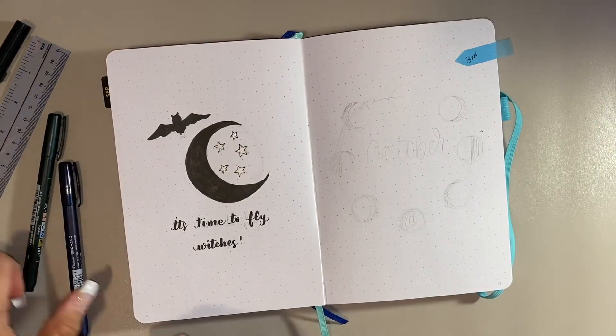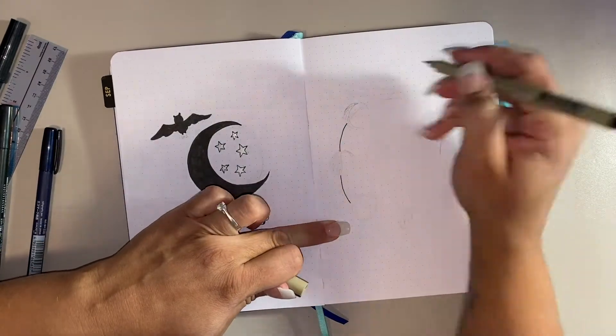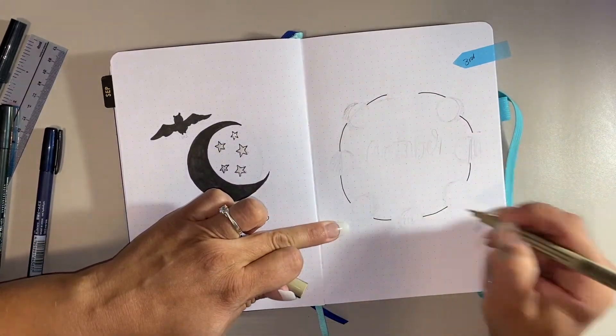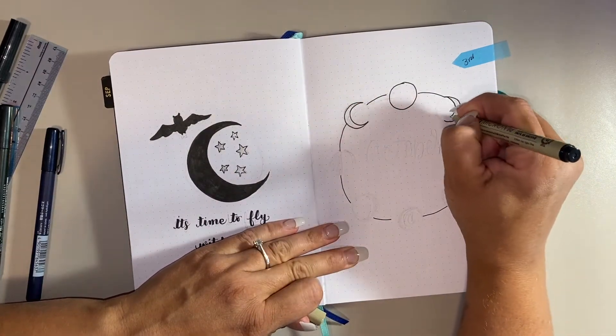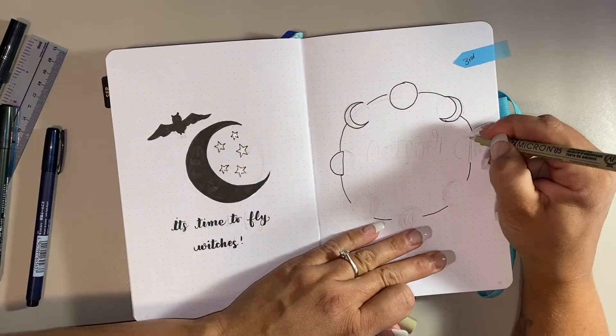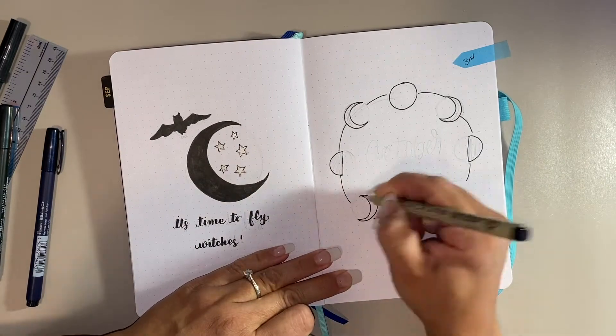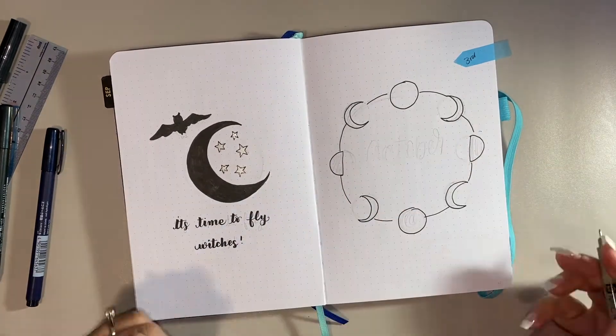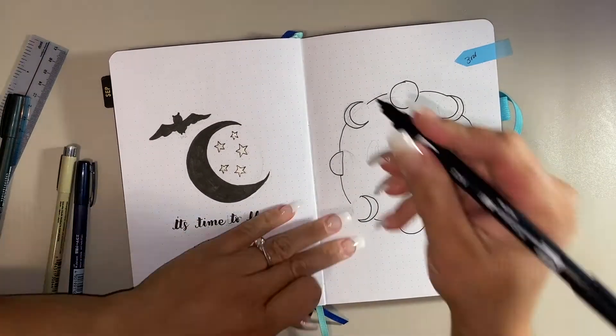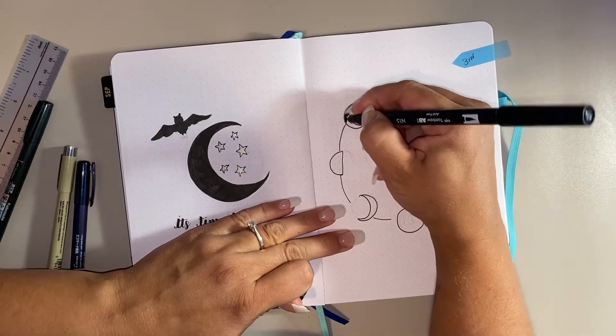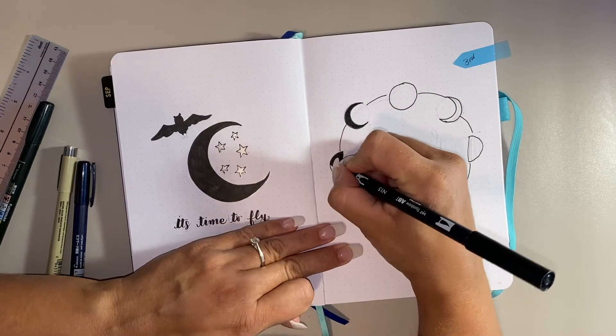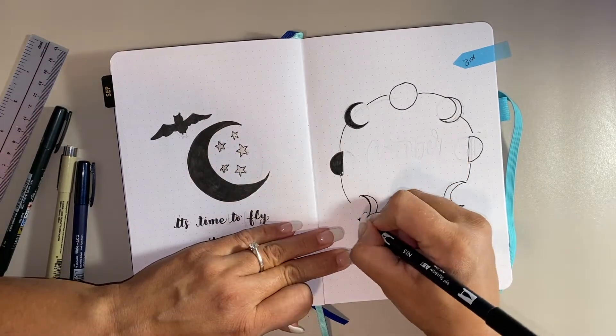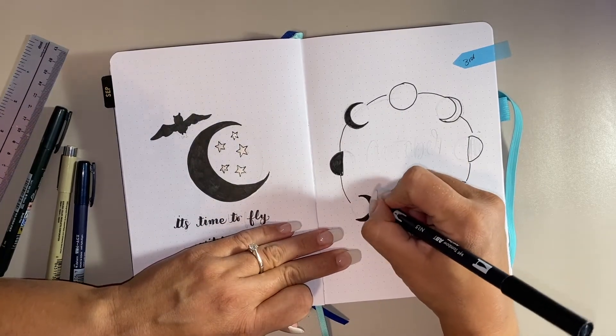When I first did the title page for October, I didn't actually fill out the entire moon, I just did the little half moons, but then you'll see soon that I go back and I change it because I just didn't like the way it looked. I did try to keep my font similar throughout the spread, but as my writing tends to, I always end up changing it halfway through.